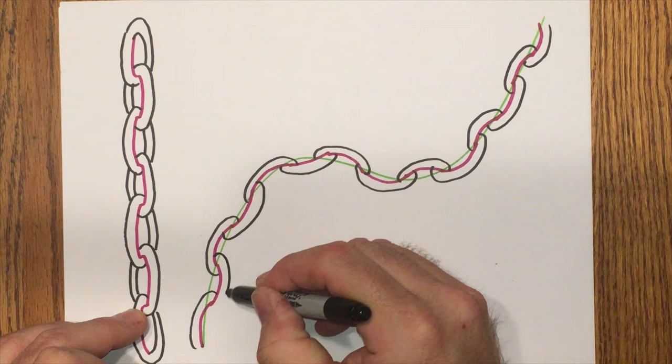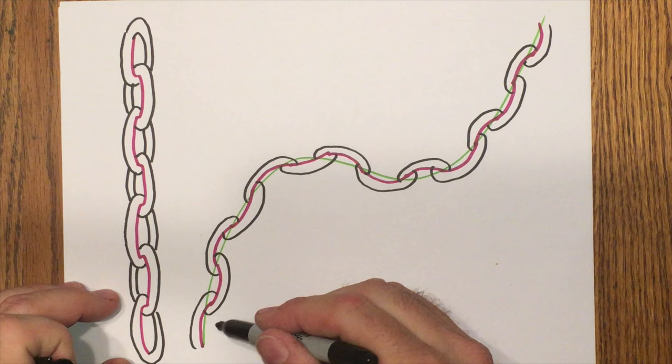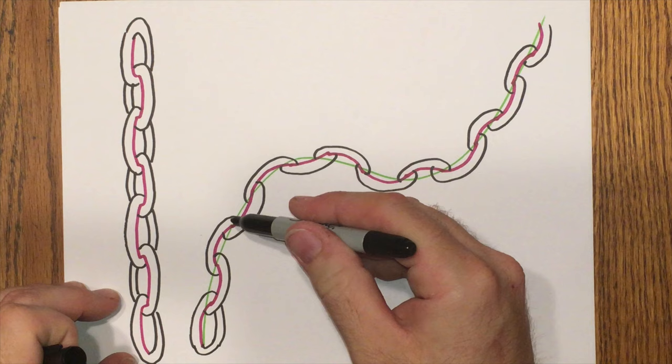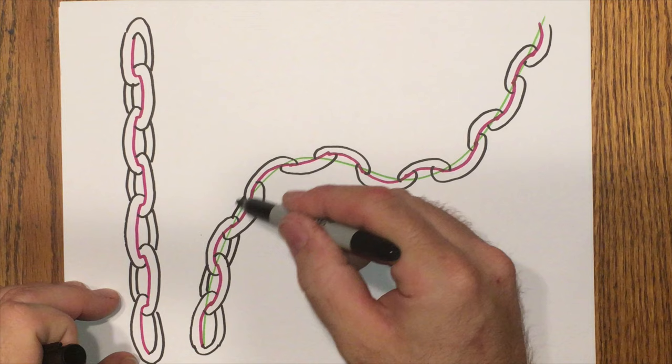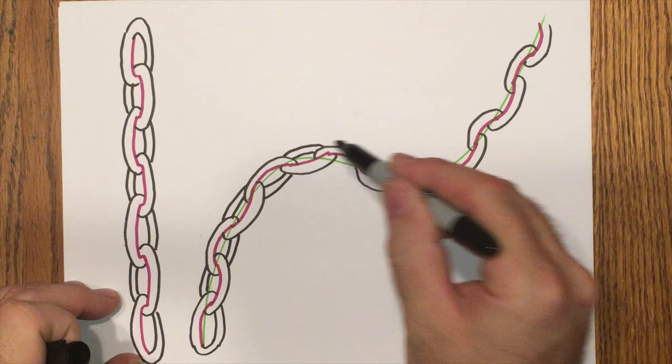I found that you could be really sloppy with this and it still works. If one link is a little bit smaller than the next one, it just looks like it's bunched up or rotated a little bit. It kind of doesn't look like a chain yet, but as soon as you start adding these little pieces, all of a sudden it comes into view and it looks like chain. It's very simple.